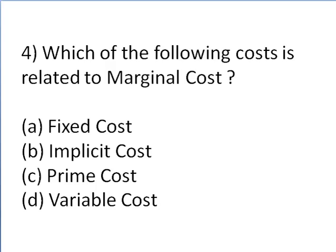Moving towards the fourth question: which of the following costs is related to marginal cost? Option A is fixed cost, option B is implicit cost, option C is prime cost, option D is variable cost. Total cost consists of two things: fixed cost and variable cost. Fixed cost and variable cost both affect the marginal cost of production.